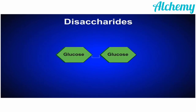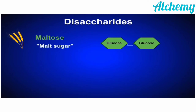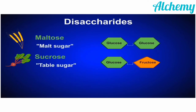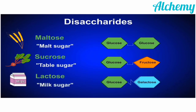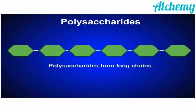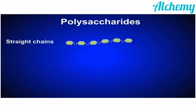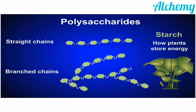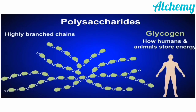Disaccharides are formed by the combination of two monosaccharides with the help of a glycosidic linkage. Maltose is formed by the combination of two glucose units; sucrose by glucose and fructose; and lactose by glucose and galactose. Polysaccharides are formed by the combination of an infinite number of monosaccharide units, consisting of straight-chain amylose and branched-chain amylopectin. Starch, cellulose, and glycogen are the major examples of polysaccharides.